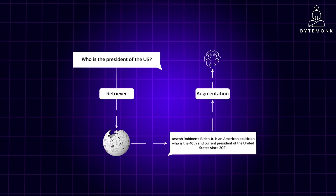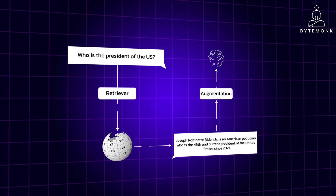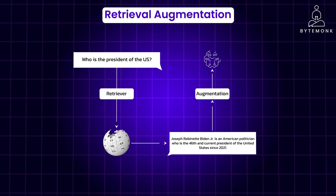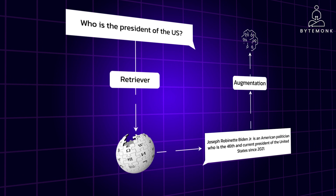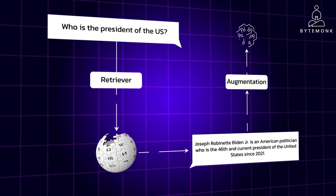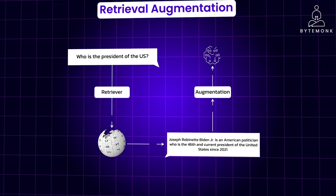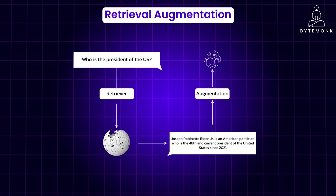RAG is a powerful paradigm that enhances the capabilities of large language models like GPT-4. At its core, RAG combines retrieval and augmentation. Retrieval is finding relevant information from external knowledge sources such as web pages, documents, and databases. Augmentation is about using the retrieved information to enhance the LLM's response. The retrieved additional context is then stuffed into a prompt template.